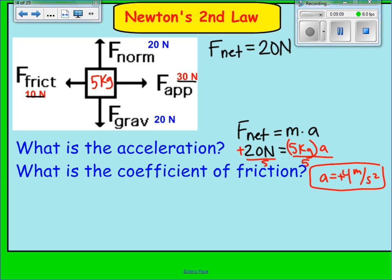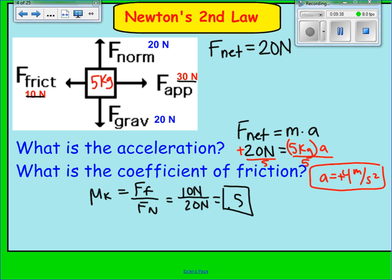The second question asks for the coefficient of friction. Since the object is accelerating — meaning it's moving — we use the kinetic coefficient of friction, which equals force of friction over force normal. Force of friction is 10 newtons and force normal is 20 newtons, so the coefficient of friction is 0.5. Remember, mu is a unitless number.